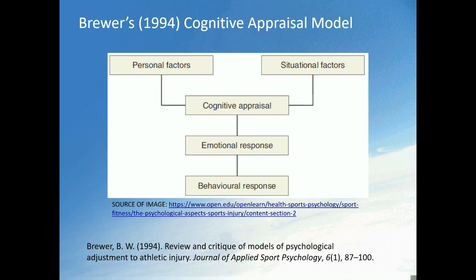The model suggests that how an individual appraises their injury — their cognitive appraisal — dictates their psychological or emotional response to the injury. The model further proposes that these emotional responses will affect the individual's behaviour in relation to the injury, for example whether or not they will adhere to their injury rehabilitation programme.